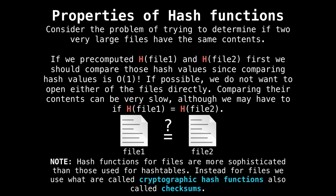Consider the problem of trying to determine if two very large files have the same contents. This is something you want to do in an operating system context all the time. So if we've computed the hash values for file one and file two, first, we should compare the hash values together to see if they match or don't match because this requires constant time work, which is super fast. So if possible, we don't want to open the files at all. This would be comparing x and y directly or file one against file two. But we will have to compare them byte per byte if their hash values are equal. So actually hash functions for files are much more sophisticated than those that we use for hash tables. Instead, we use very sophisticated hashing algorithms called cryptographic hash functions and checksums.